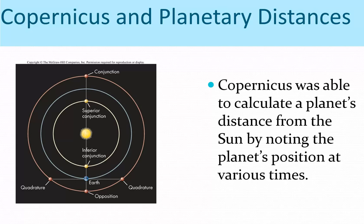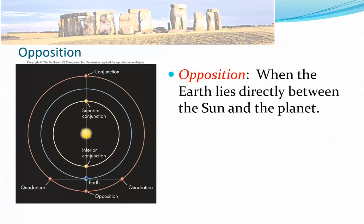He looked at positions. This diagram shows all the different terms we're going to learn: conjunction, superior conjunction, inferior conjunction, opposition, and quadrature. Opposition is when something is in the opposite direction to the sun — it's implied opposition with the sun. So if the sun is in one direction, a planet in the opposite direction is in opposition. When a planet is in opposition, it is on the opposite side of you from the sun.